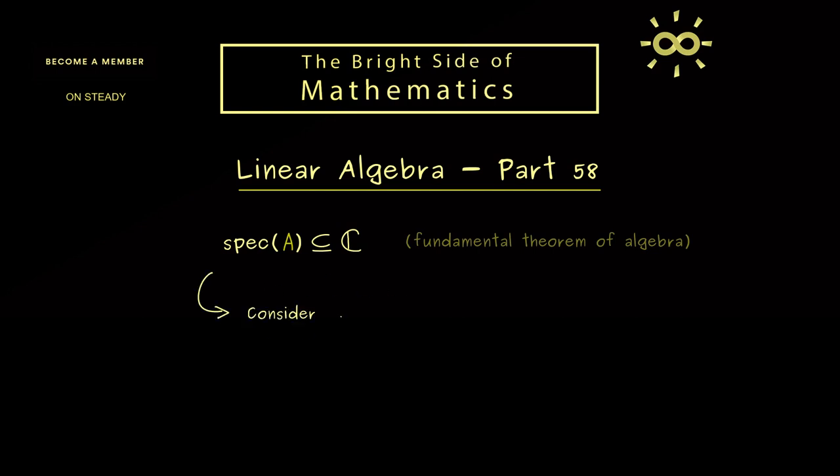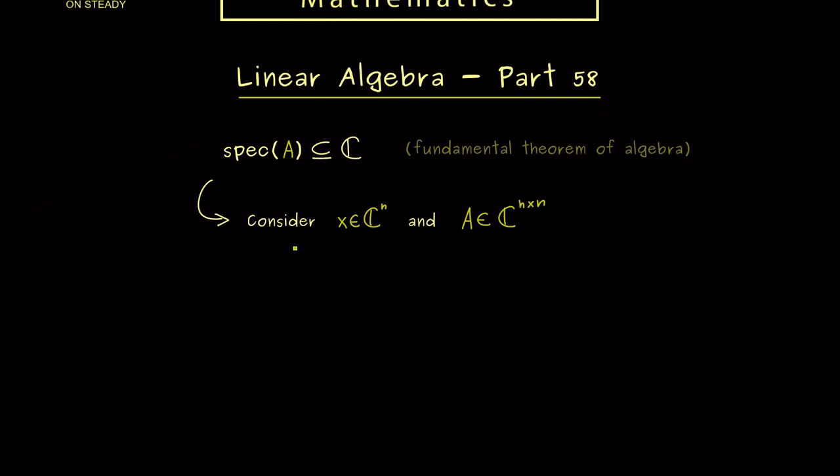Hence from now on we also want to consider vectors from C^n. Of course this is the same as R^n but now with complex numbers as entries. And of course exactly the same we will also do with matrices. So essentially nothing changes here in the definition just the elements, the entries from matrices and vectors come now from a bigger number set. However with that choice our eigenvalue theory gets much better.